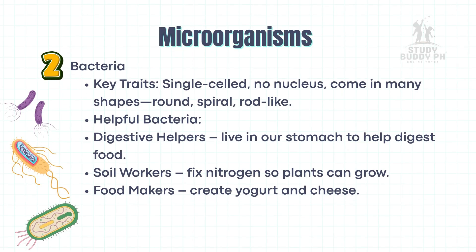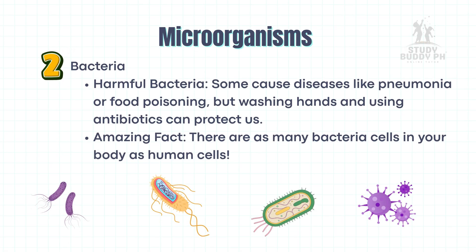Bacteria: Key traits — single-celled, no nucleus; come in many shapes: round, spiral, rod-like. Helpful bacteria: digestive helpers live in our stomach to help digest food; soil workers fix nitrogen so plants can grow; food makers create yogurt and cheese. Harmful bacteria: some cause diseases like pneumonia or food poisoning, but washing hands and using antibiotics can protect us. Amazing fact: there are as many bacteria cells in your body as human cells.